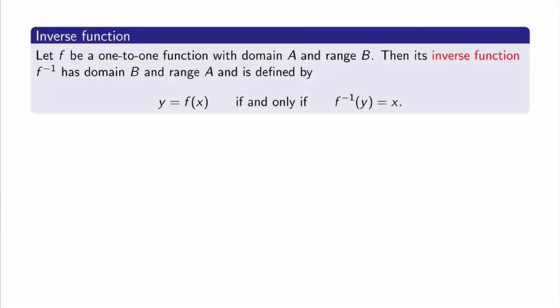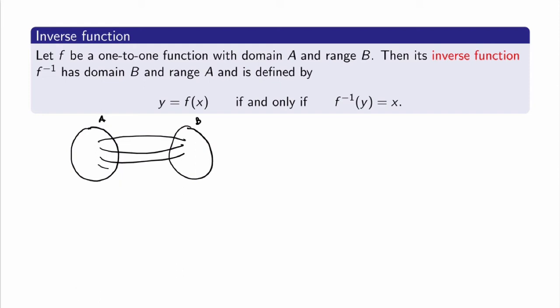Let me now define what the inverse function of a one-to-one function is. Recall that if a function does a certain thing — for example, convert Celsius to Fahrenheit — we want the inverse function to do the exact opposite, to undo what the function was doing. So let f be a one-to-one function with domain A and range B. Then its inverse function f⁻¹ has domain B and range A, defined by: f⁻¹(y) = x if and only if f(x) = y. The inverse starts in the range and gives back the point in the domain we started with.